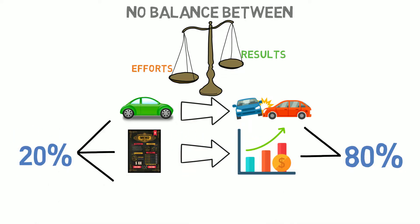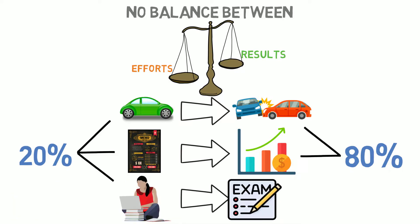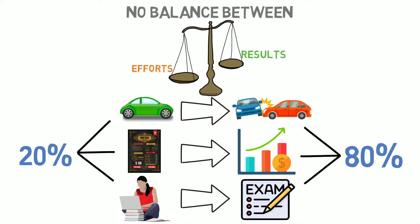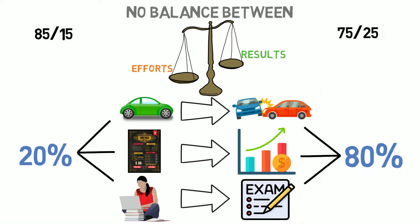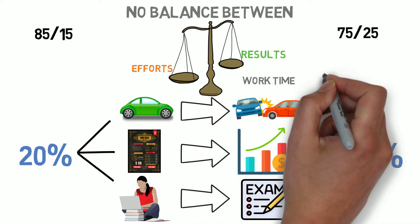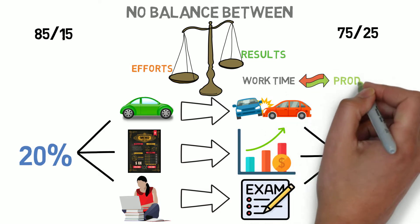Do you also notice that 20% of your actions account for 80% of your results? The 80-20 ratio can be slightly different in some cases, like 85-15 or 75-25, but the principle remains the same. There is no correlation between the amount of work you put in and your productivity.